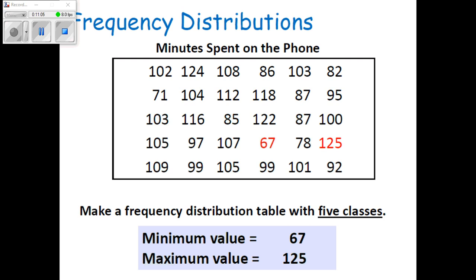Now this is a frequency distribution example — how many minutes 30 people spent on the phone. We need to make a frequency distribution table with five classes. The minimum value is 67 and the maximum value is 125. The person who spent the most minutes on the phone spent 125 minutes, and the one who spent the fewest spent 67 minutes.